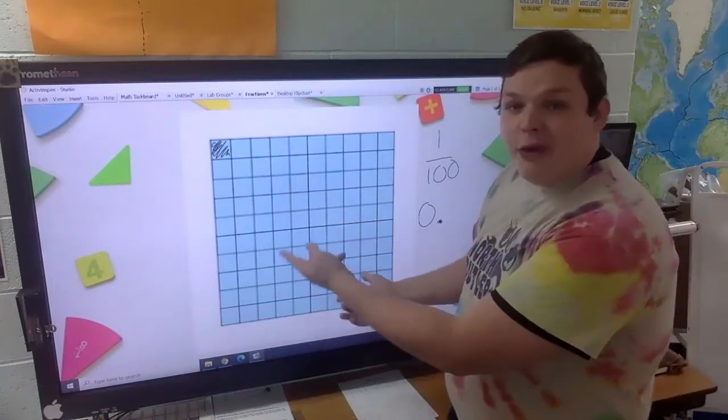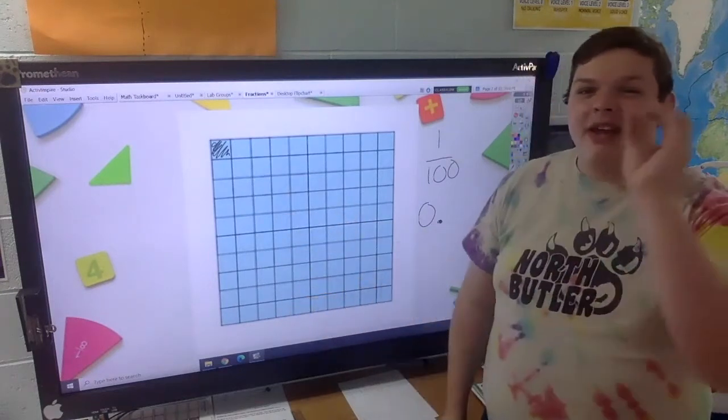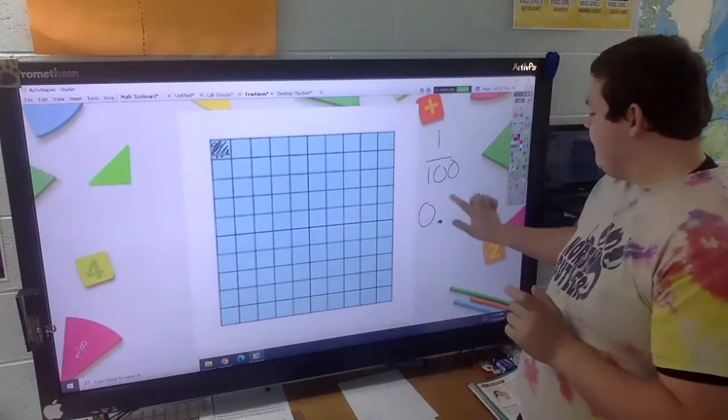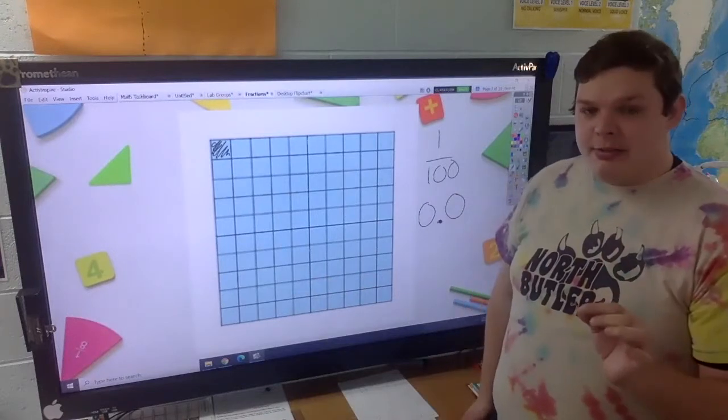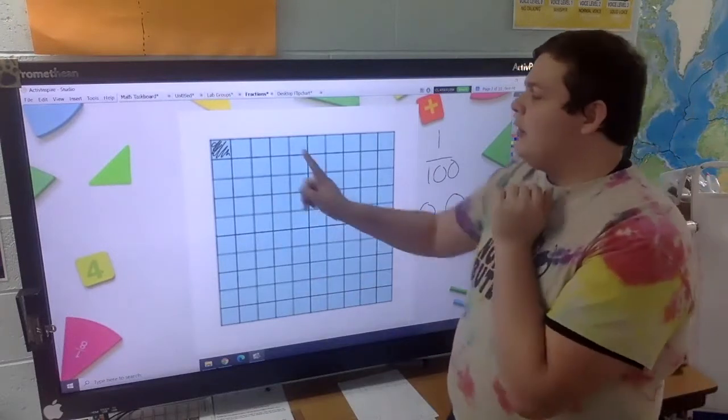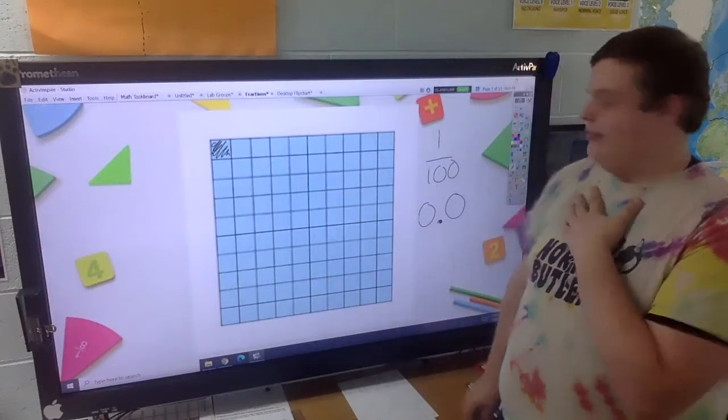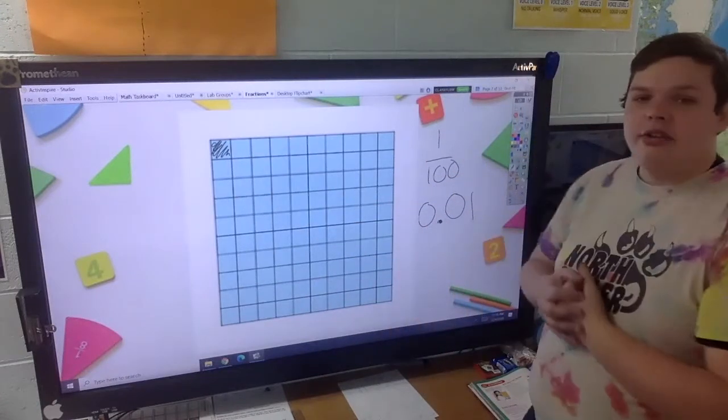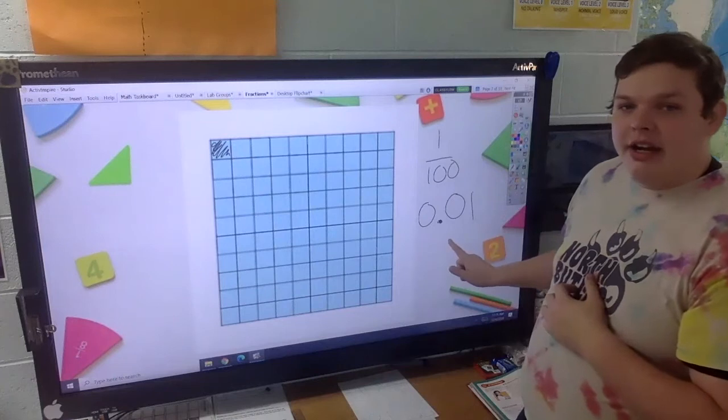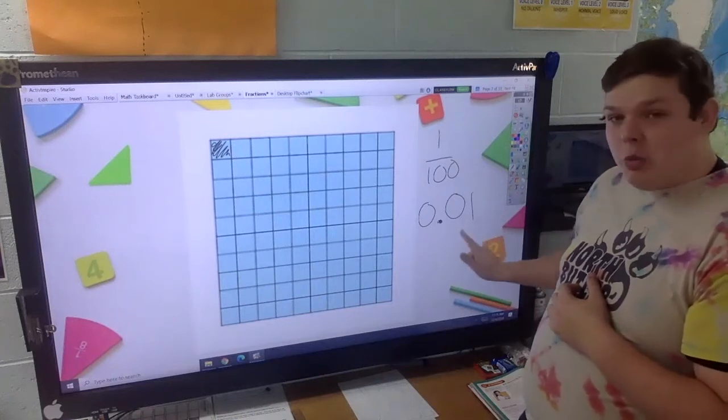We don't have a full 10 here. So that means we have zero tenths. Now we need to write the hundredths place. We have only one hundredth. So the decimal right here, that is zero and one hundredth.